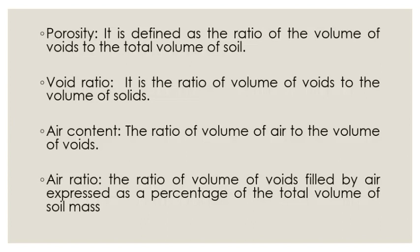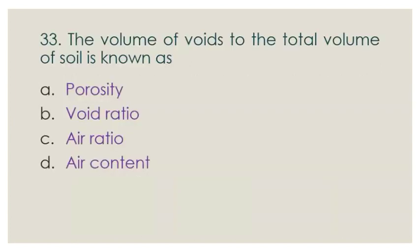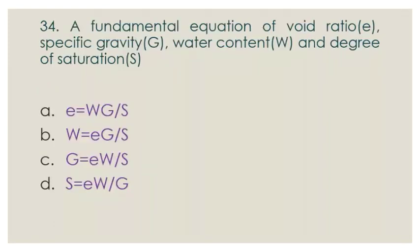Void ratio is the ratio of volume of voids to the volume of solids. Air content is the ratio of volume of air to the volume of voids. Air ratio is the ratio of volume of voids filled by air expressed as a percentage of the total volume of soil mass. The question asks for volume of voids to total volume of soil, so the answer is option A — porosity.